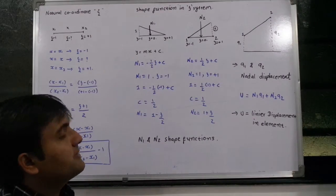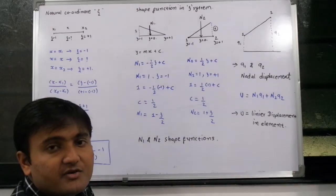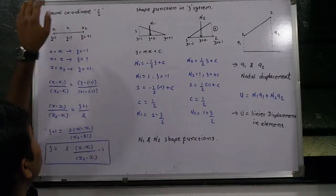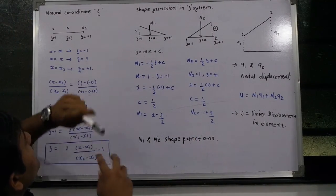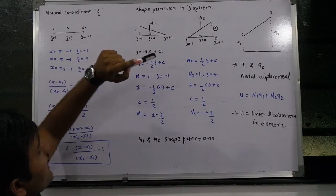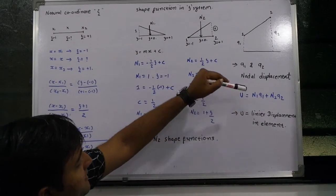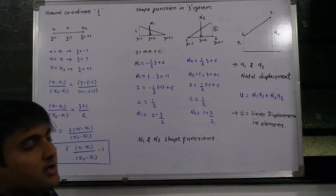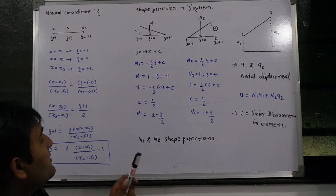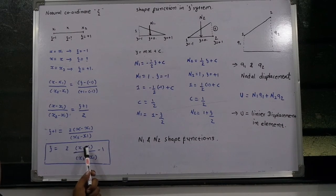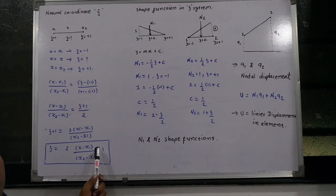Hello friends, my name is Jaivir Shah. Today we are going to discuss the natural coordinate zeta and the linear displacement in element u. In the finite element method, we generally use the equation: zeta is equal to 2 times (x minus x1) divided by (x2 minus x1), minus 1.